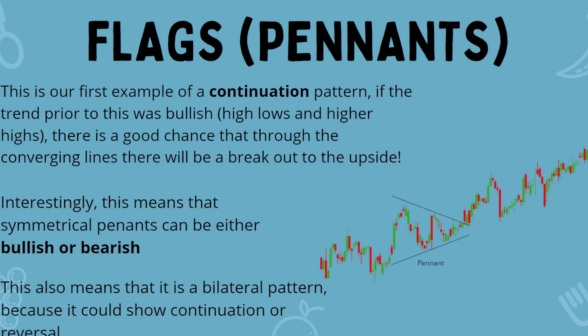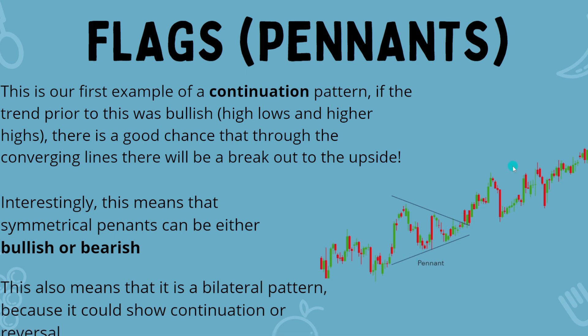Bull flags and bull pennants — our first example of a continuation pattern. If the trend prior was bullish with higher highs and higher lows, there's a good chance that at the two converging lines of the pennant we'll see another explosive move to the upside, almost like a symmetrical triangle. Interestingly, bull flags and pennants are actually bilateral patterns because either direction is possible depending on the market activity prior to the flag or pennant formation.